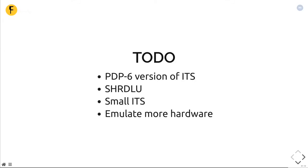We still have some important items which are not done. The most important may be the original PDP-6 version of ITS — we haven't found it anywhere. The robot simulator Shrdlu isn't running yet. There was also a re-implementation of ITS on a small PDP-11 called Small ITS, which is also not running yet. And there's always work to do to emulate more hardware — for example, there was a video camera, a robot arm, and some things like that that we'd like to see running eventually.